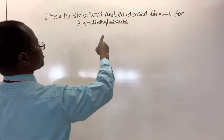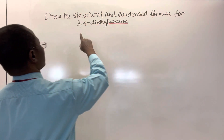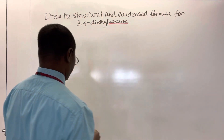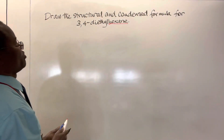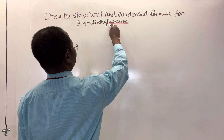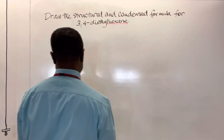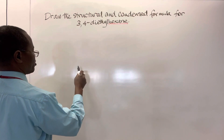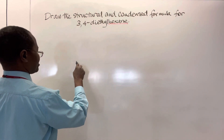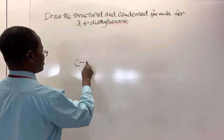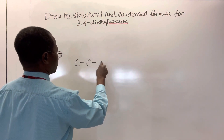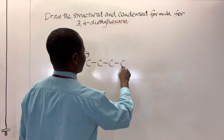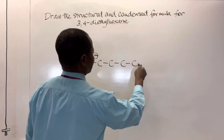We're going to draw the structural and condensed formula for 3,4-diethylhexane. The first thing we do is go to the family name 'hexane,' which has six carbons. So we're going to draw the six carbons in series: one, two, three, four, five, six.